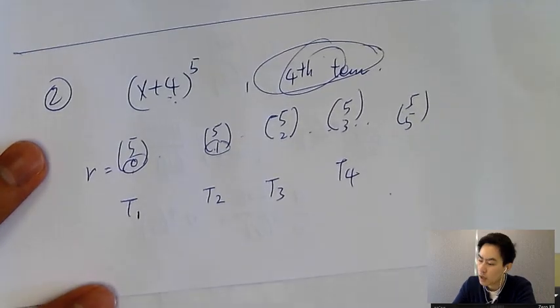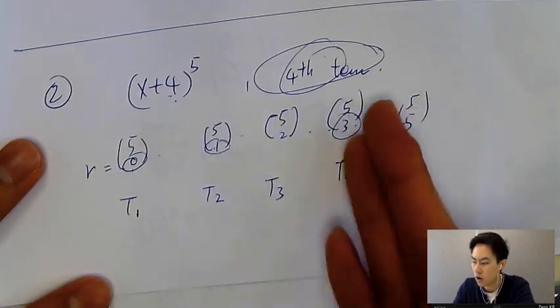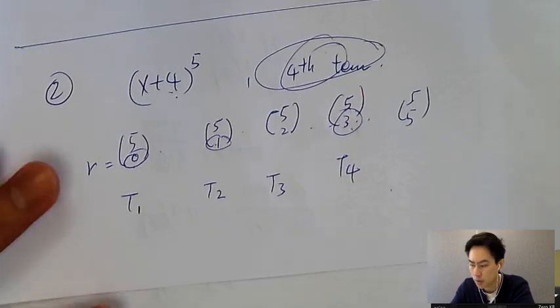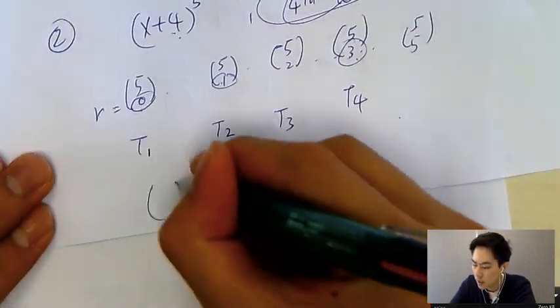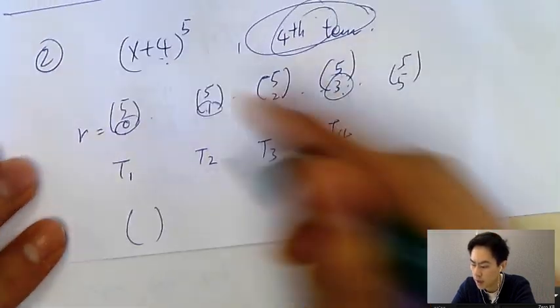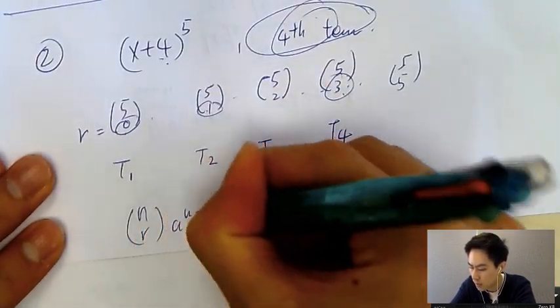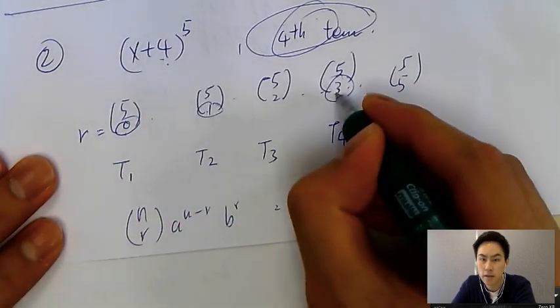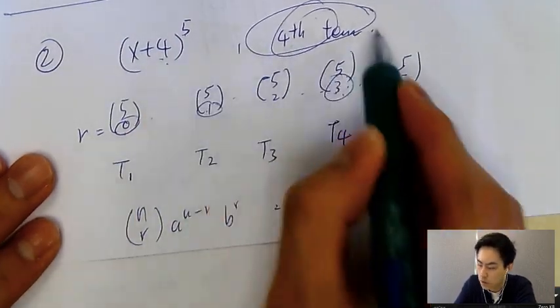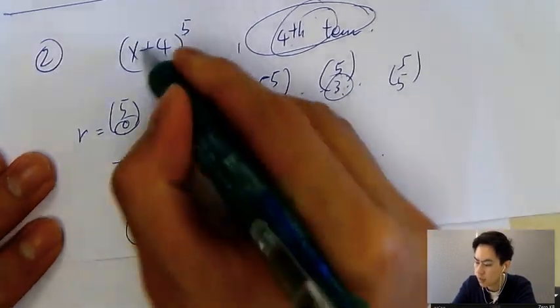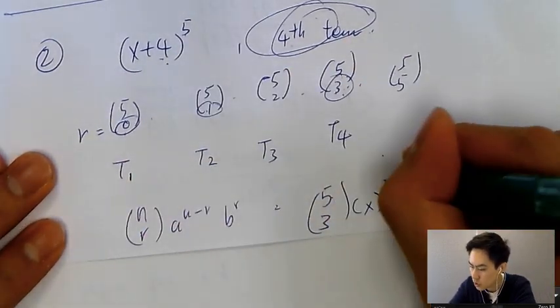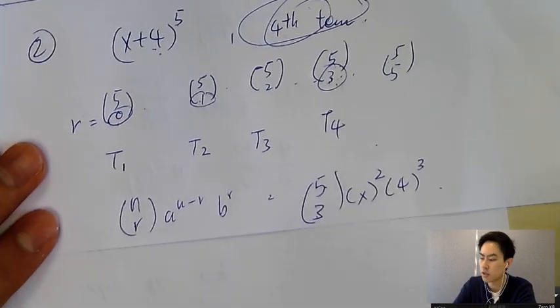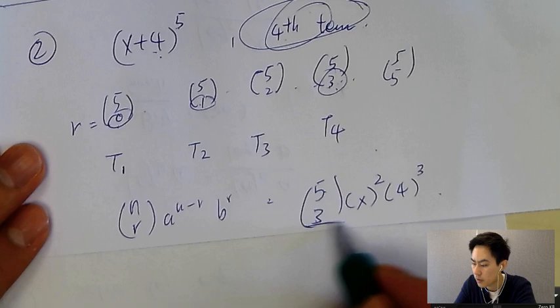Why is this so important? Because if I know r is 3, then you can find the expansion by applying nCr a^(n-r) b^r. n is the power of 5, and r for the fourth term is 3. So it's 5C3 times x^(5-3) which is x^2, times 4^3. Then you can go to GDC to calculate this value.